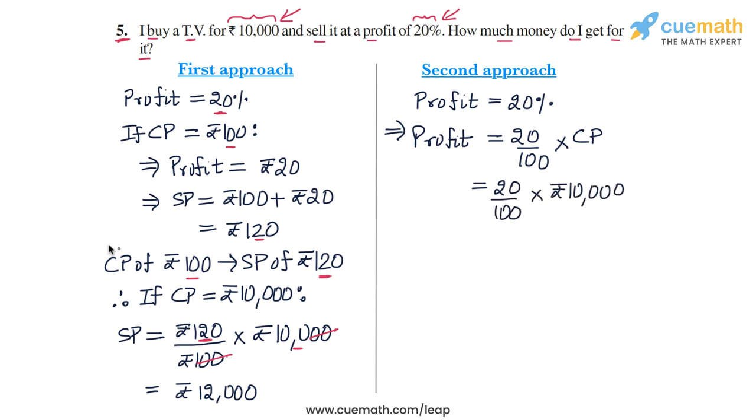So 20 by 100 into 10,000. So this will be two zeros we cancel, 20 into 100. So this will be Rs. 2000. So a profit of Rs. 2000 was made.